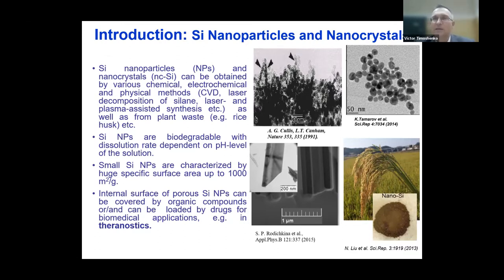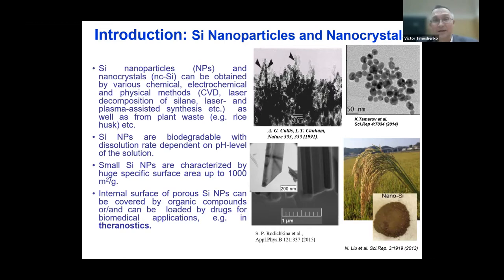They can also be like wires. Silicon nanoparticles can be formed by many methods. For example, they can be prepared from plant waste, such as rice husk.